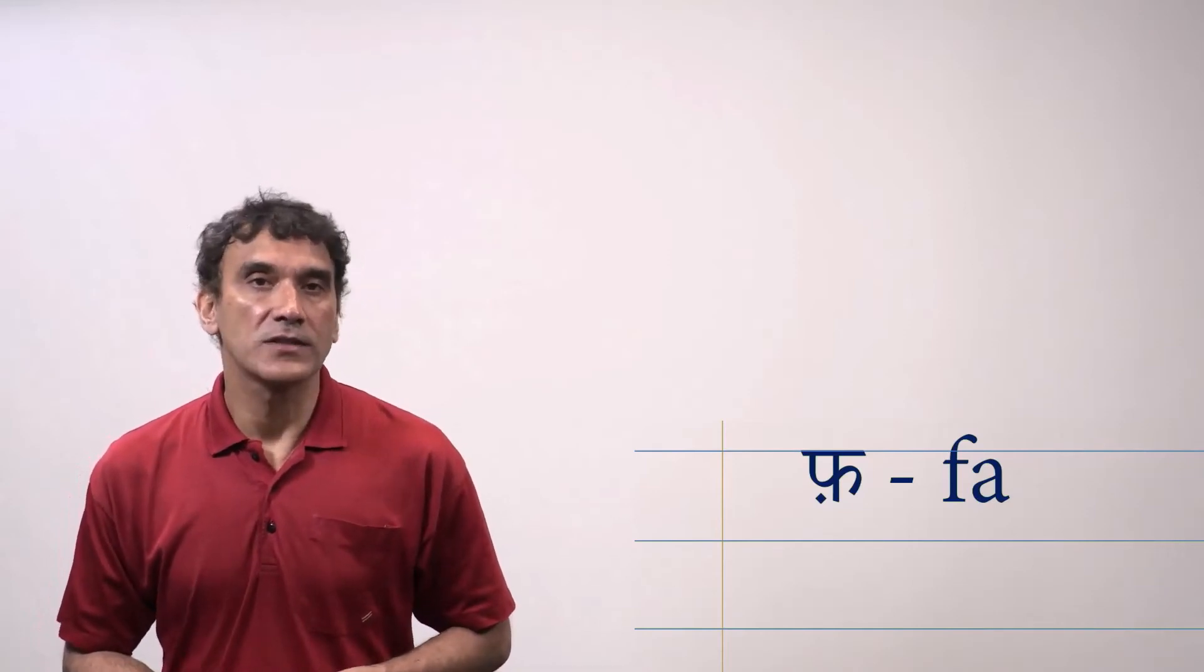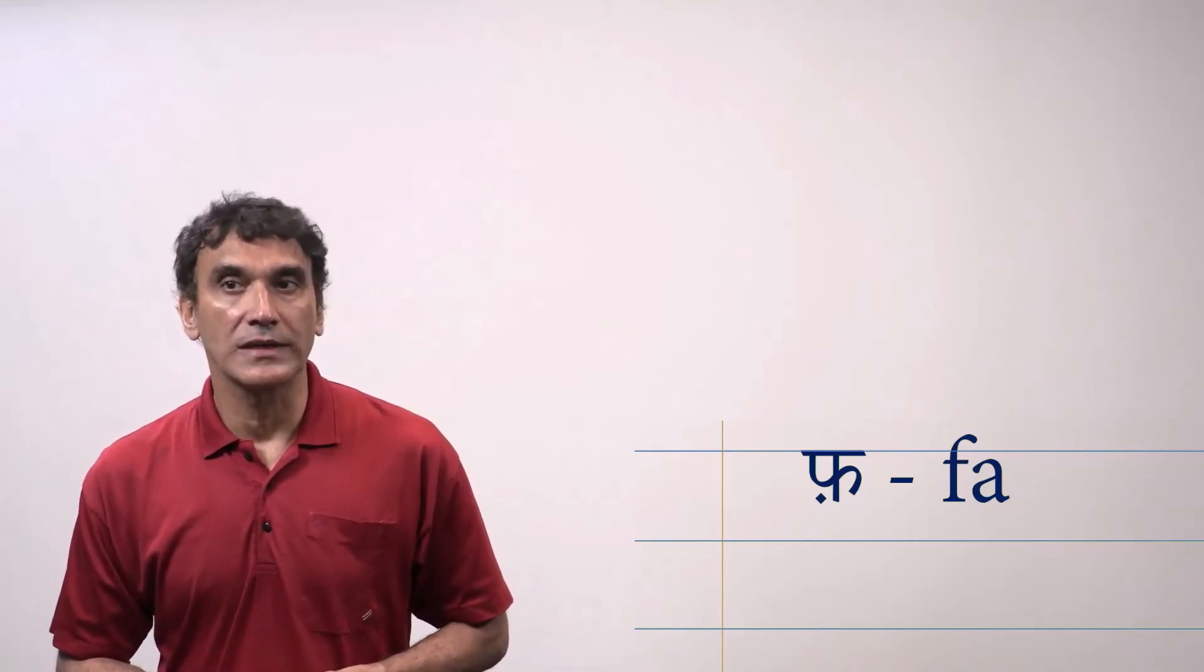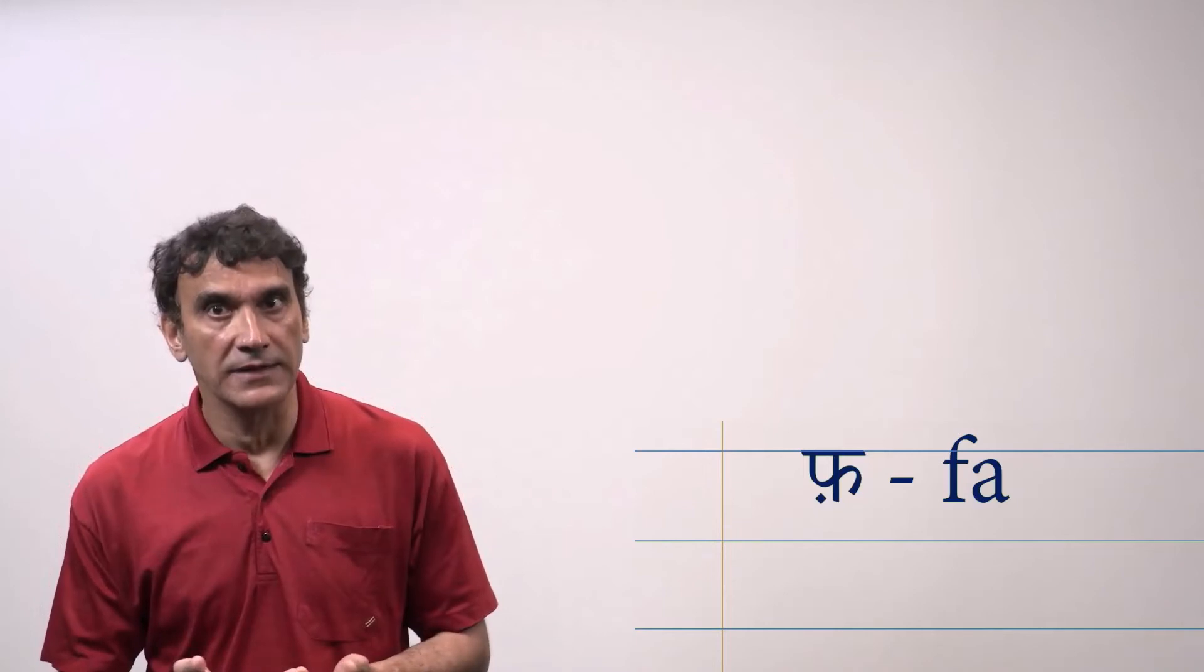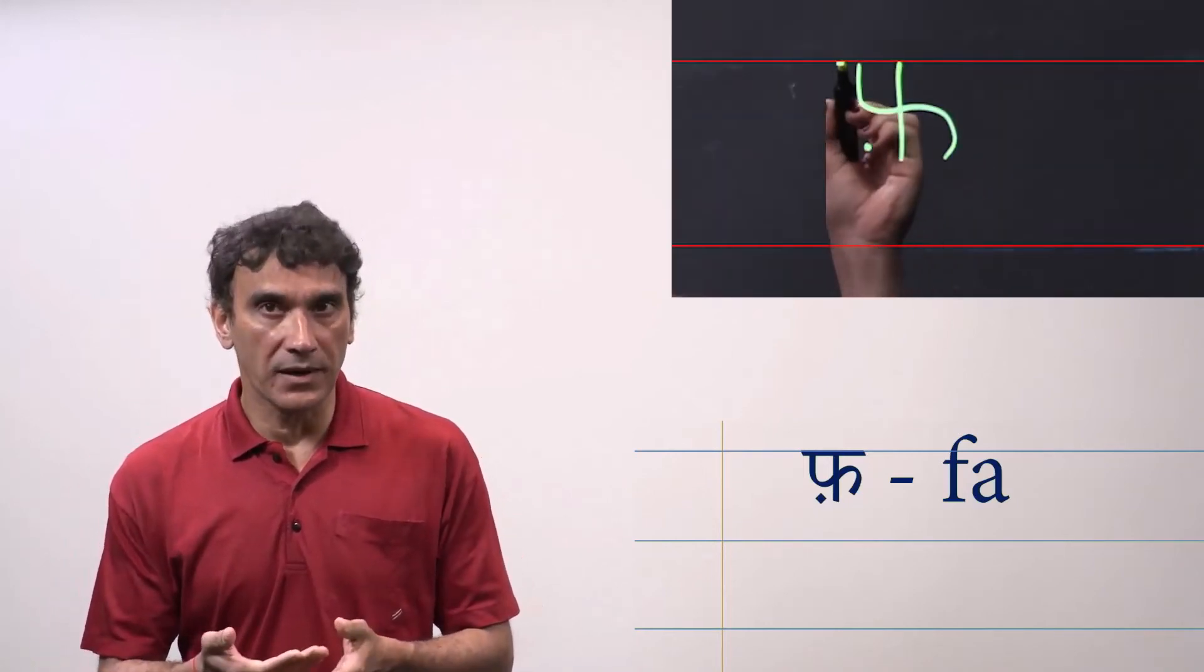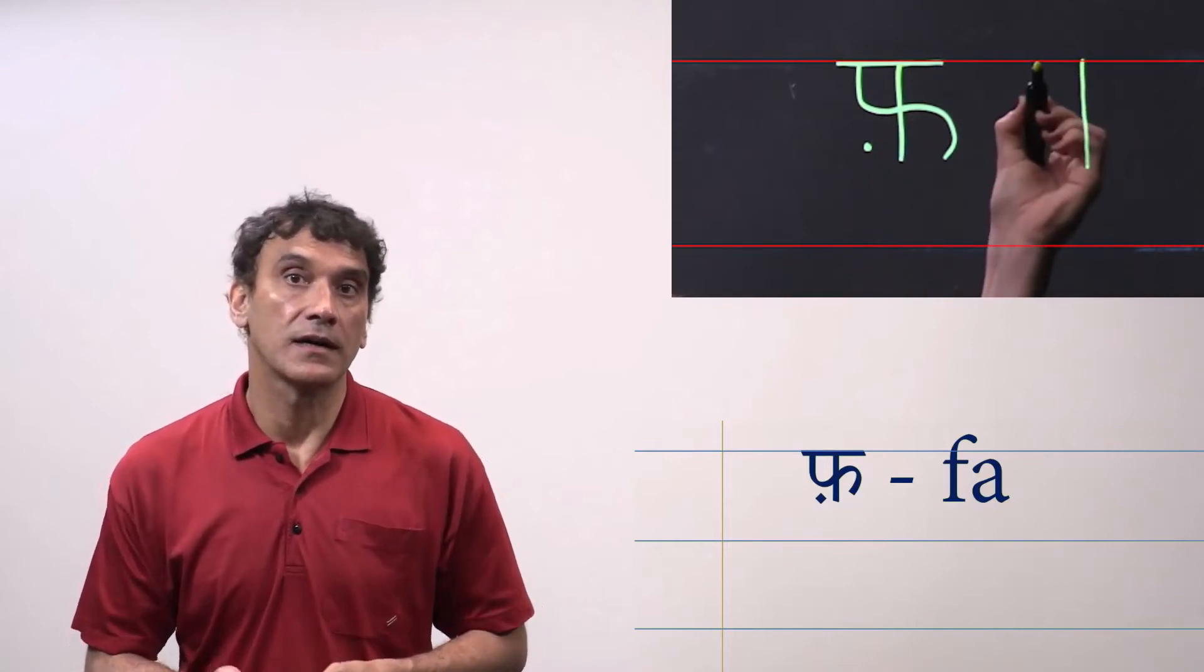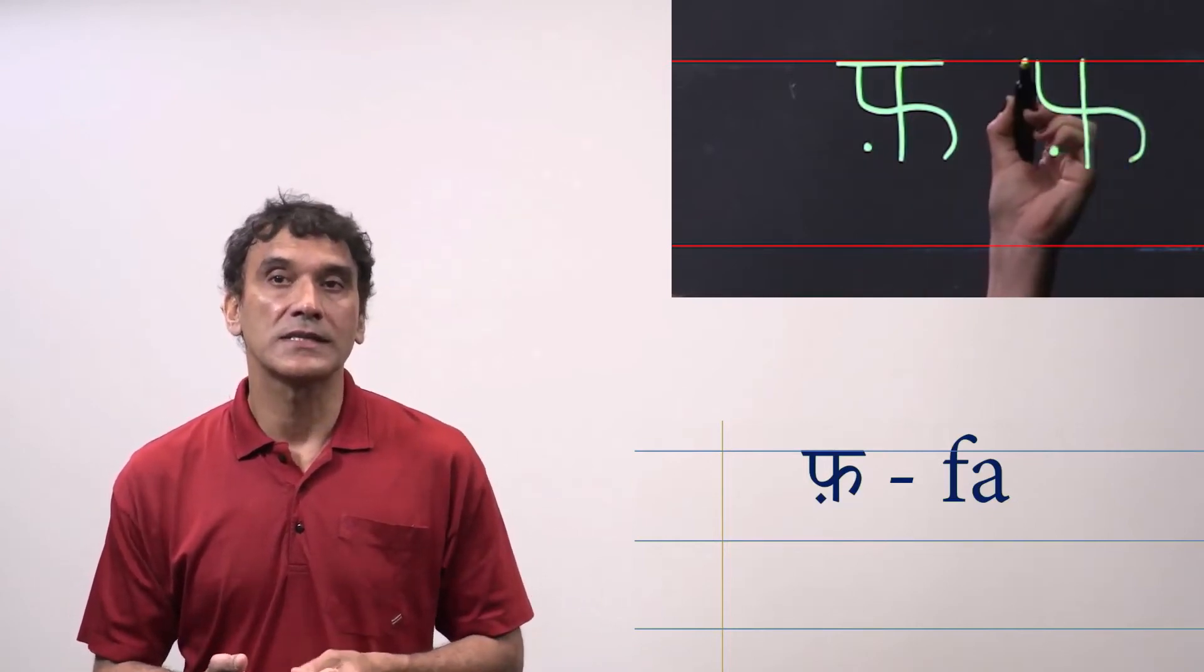Similarly, the F sound is also not traditional Indic sound. That's why it is absent in the Devanagari writing system. In Hindi, it is represented by the consonant H with the dot Anukta underneath. Here you can see how it is written.